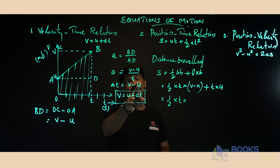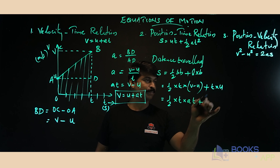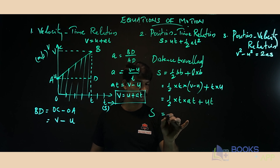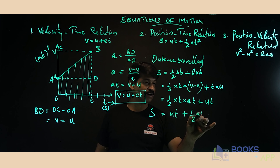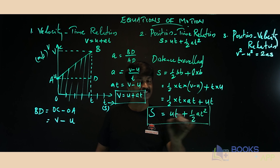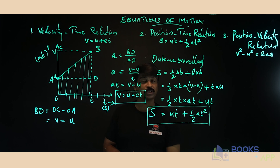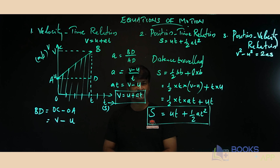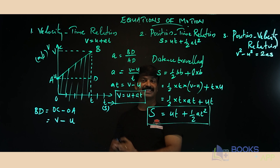So the distance s equals ½ × t × (v - u) + t × u. From the first equation, v - u = at. Substituting: s = ½ × t × at + ut = ut + ½at². This is the second equation of motion, the position-time relation: s = ut + ½at².